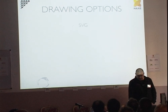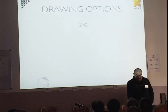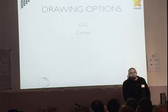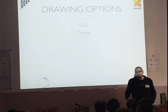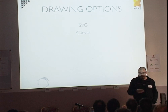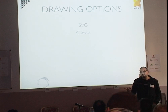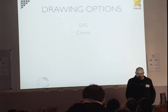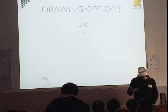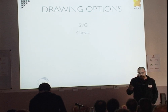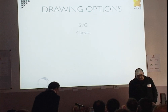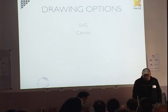You have mainly two options to paint on the browser, which are SVG and Canvas. SVG is a pure vector graphics platform, so you really draw using vectors. While Canvas is a bitmap, so you draw on it using pixels.